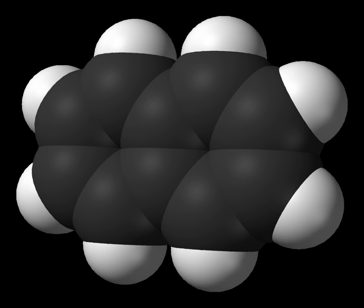Naphthalene's chemical formula was determined by Michael Faraday in 1826. The structure of two fused benzene rings was proposed by Emile Erlenmeyer in 1866, and confirmed by Carl Grabe three years later.